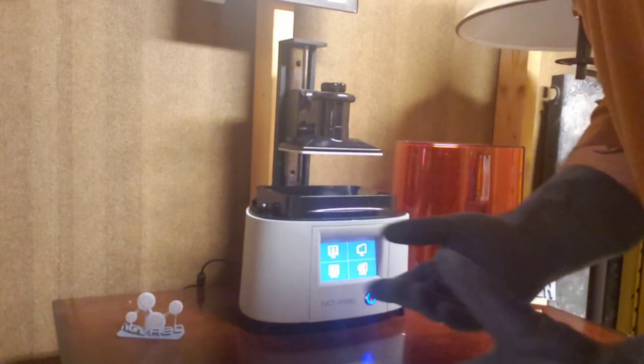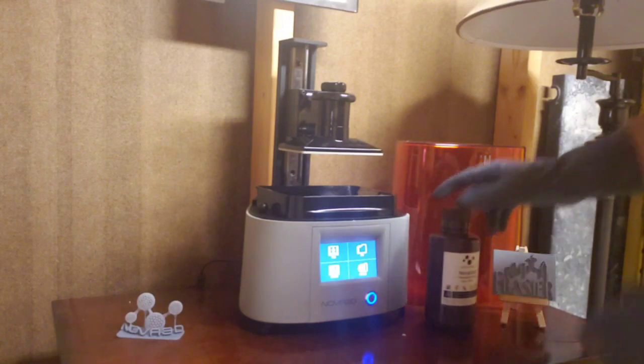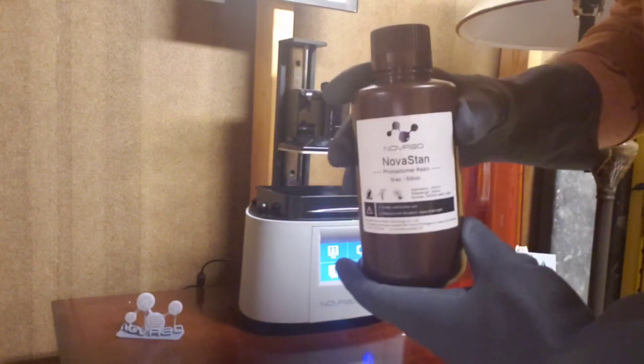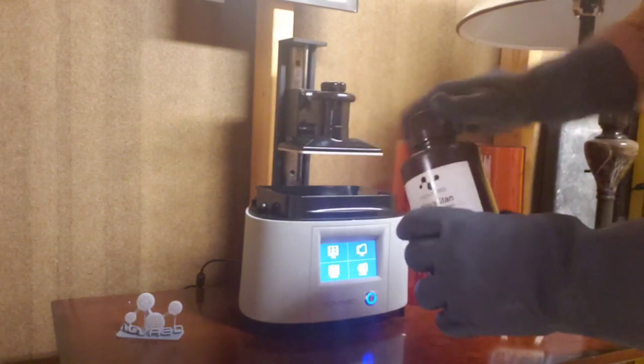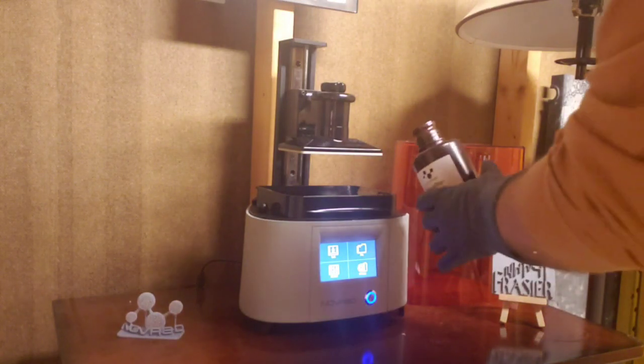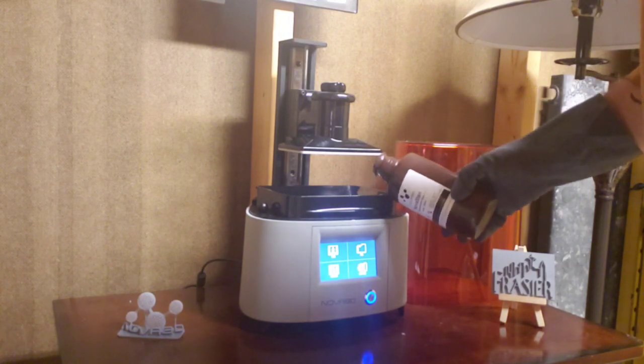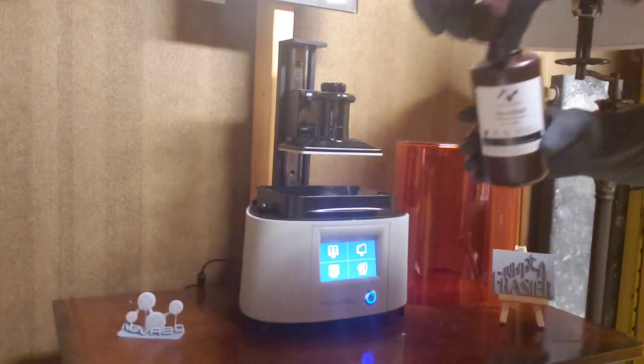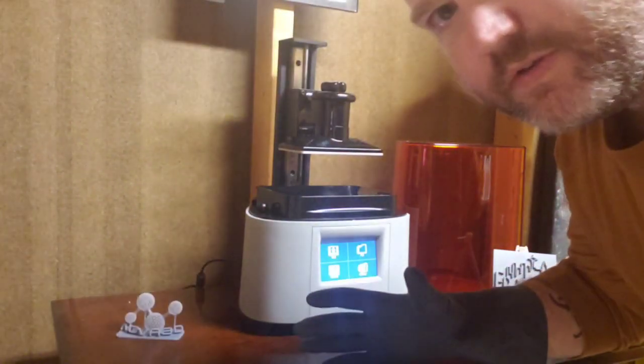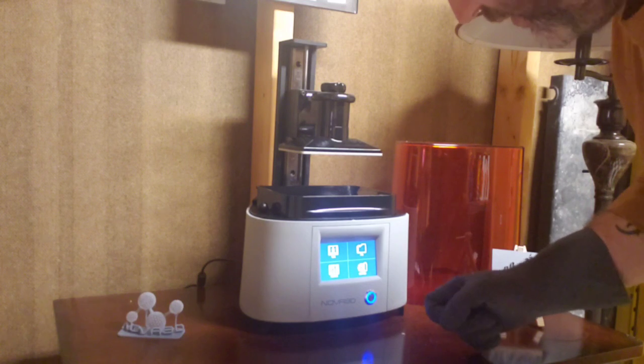So what you can't see is I have already downloaded onto the thumb drive the file that we want to print, which is going to be this Frasier relief printer. I'm going to take some of the Nova 3D resin, give it a little shake. I like to wear gloves when I've been dealing with this stuff because it can be kind of nasty. So let's pour a little bit in the vat.